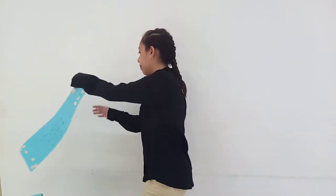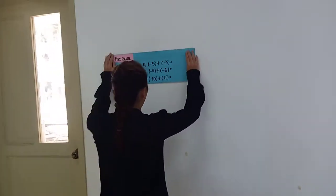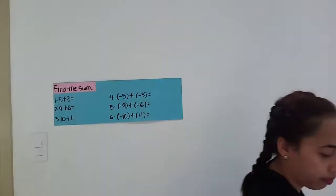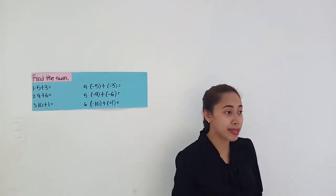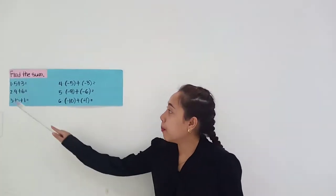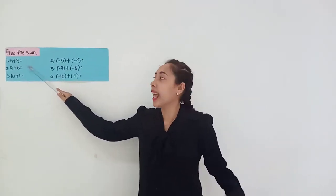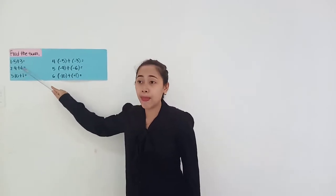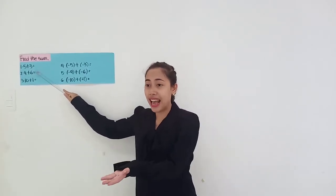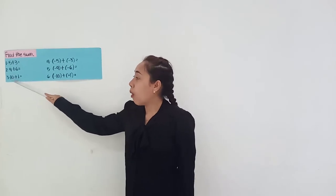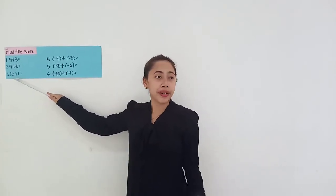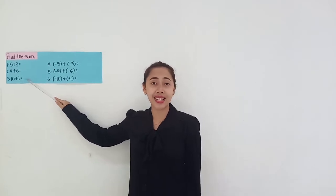So in relation to that, you will have an activity. Please answer this for 3 minutes on a scratch paper. Time is up. What is the answer for number 1? 5 plus 3 is equal to? Yes, Janus — very good, 8. How about 9 plus 6? Janessa — 15. How about 10 plus 1? Very good, the answer is 11.